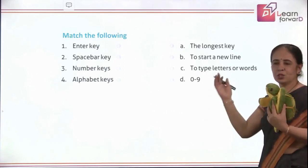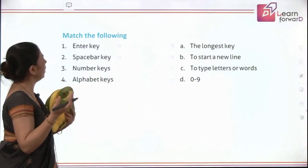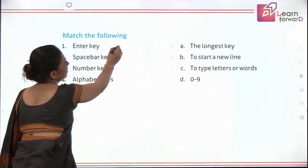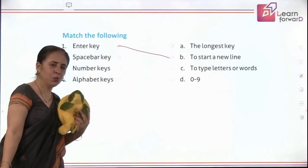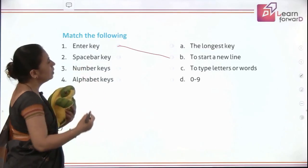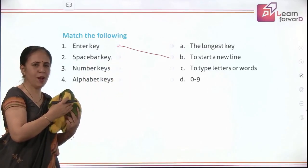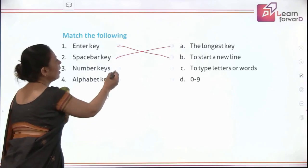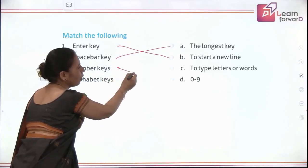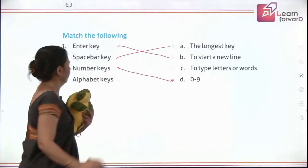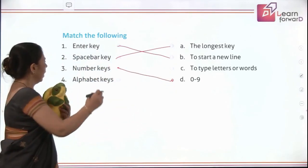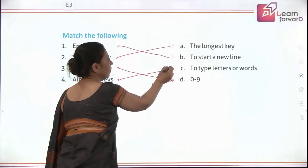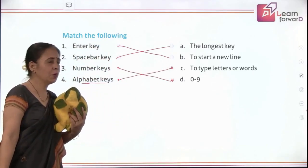Now let's match Column A and Column B. Enter key is used to start a new line. Space bar — just look which matches — it is the longest key. Number keys are from 0 to 9. And alphabet keys are used to type letters or words.